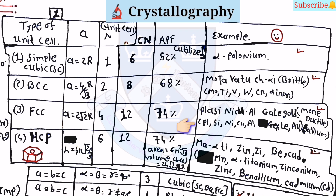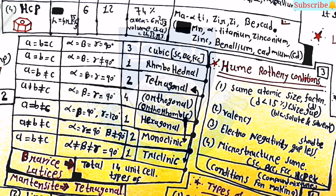For the HCP (hexagonal close-packed) structure: h is equal to 4R times root(2/3). Here n is equal to 6 and CN is equal to 12, similar to FCC, with APF of 74%. The examples are manganese, alpha titanium, zirconium, zinc, beryllium, and cadmium.